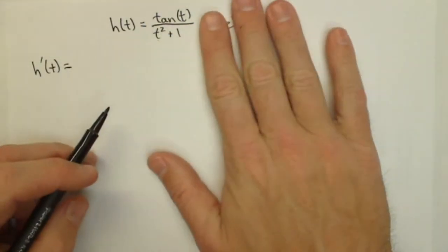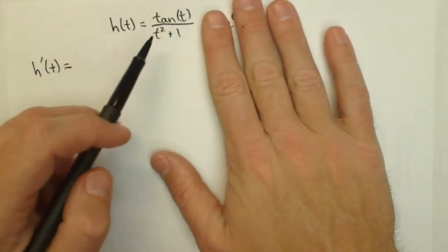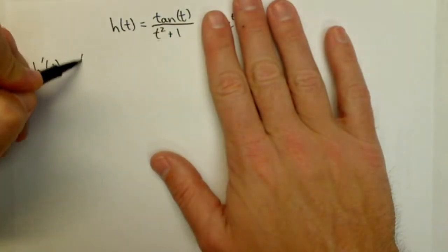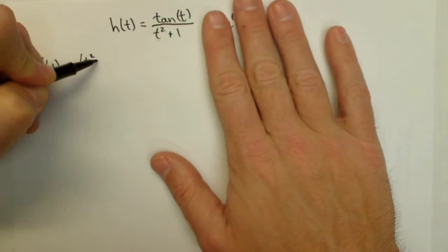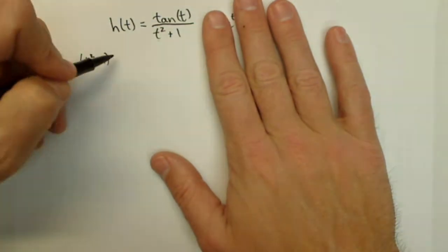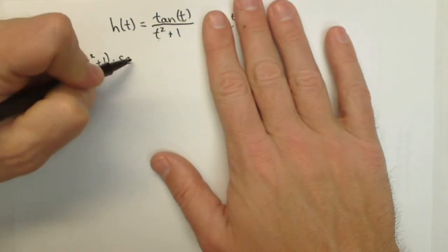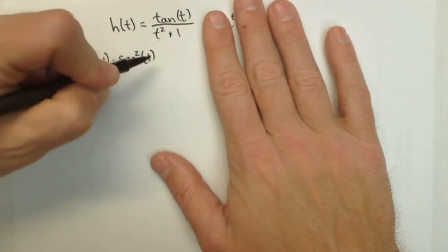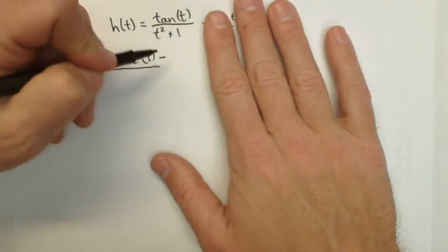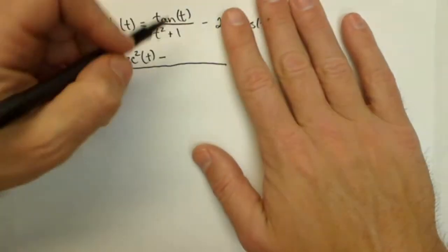So h prime of t, let's ignore this for right now. I am just going to apply the quotient rule to this. So that's the denominator, t squared plus 1 times the derivative of the numerator. Remember, derivative of tangent is secant squared t minus, we're still working on the numerator here.